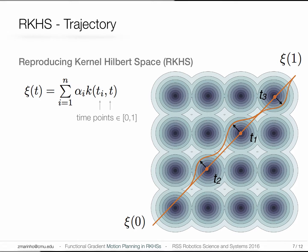We do this for each of the time points that represent our trajectory. And in the end, our trajectory will simply be a sum of kernel perturbations centered around each of these time points.